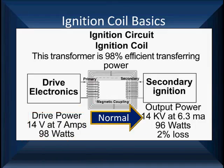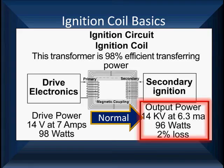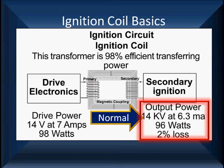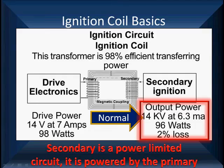On the output side, we have output power: 98 minus 2%, which gives us 96 total watts. If the secondary resistance and spark gaps require 14 kV in order to get a spark, the amperage of that spark will be 6.3 milliamps — milliamps times volts comes back to the same 96 watts. What we have in is what we get out. That's an important thing to understand because the secondary is a power-limited circuit, powered by the primary.